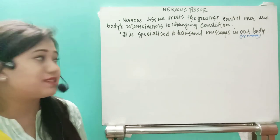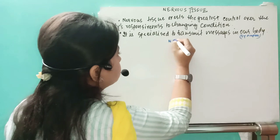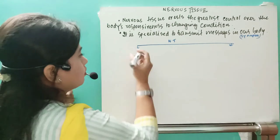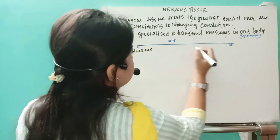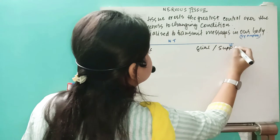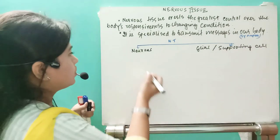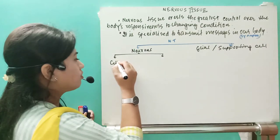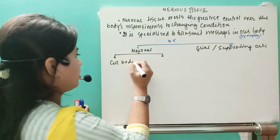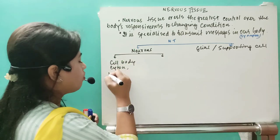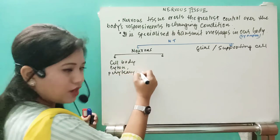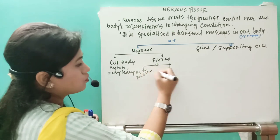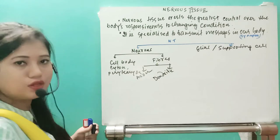So nervous tissue is divided into two types: neurons and glial cells, also called supporting cells. The neuron has two parts: the cell body, also called the cytone or perikaryon; and the fibers, which are of two types — axon and dendrite. So one neuron has dendrites, a cytone, and an axon.